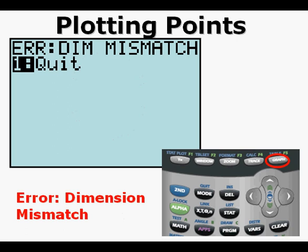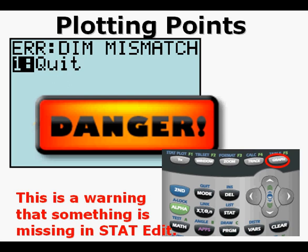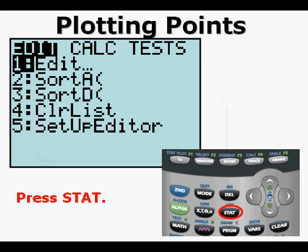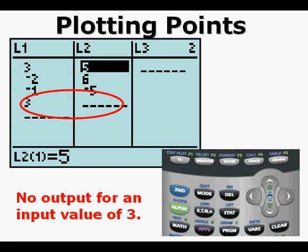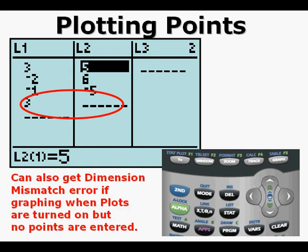You may sometimes press GRAPH expecting to see a graph or plotted points and see an error — a Dimension Mismatch message. This message serves as a warning that something is missing in the STAT EDIT submenu. Go to STAT EDIT by pressing STAT, then ENTER. We see that we have no output for an input value of 3 — therefore the dimensions are mismatched, giving us an error message. You can also get a dimension mismatch error if you have plots turned on but no points entered in the lists.